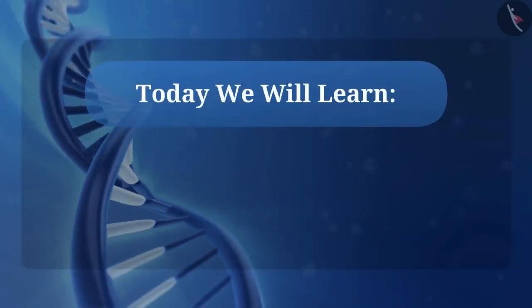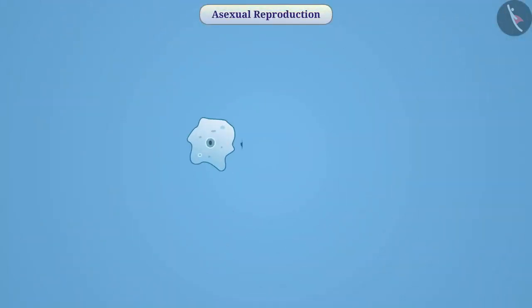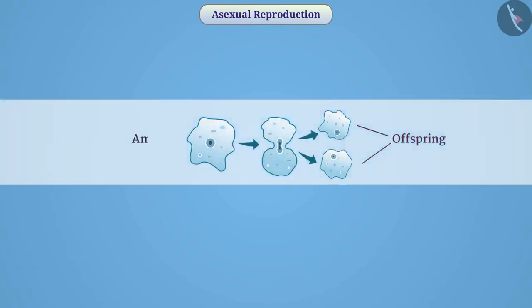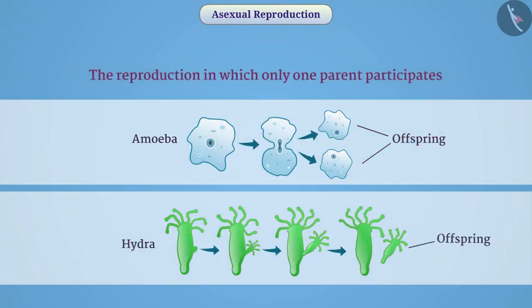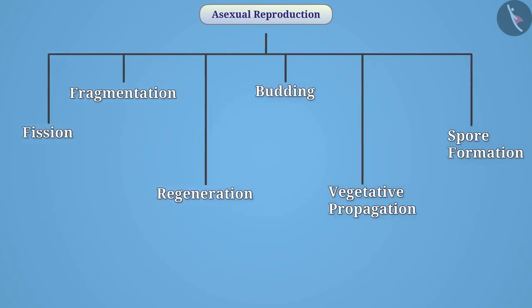Today we will learn about the types of asexual reproduction. Some organisms produce the next generation from a single parent, like amoeba, hydra, etc. The reproduction in which only one parent participates is called asexual reproduction. A variety of asexual reproduction is found in different organisms, and on that basis, there are different types.